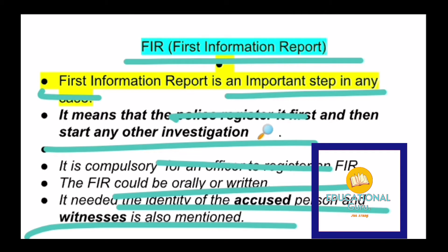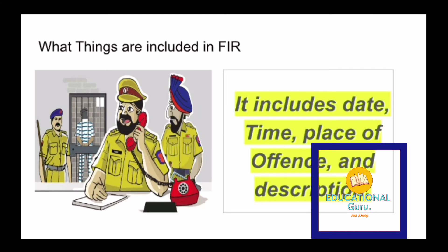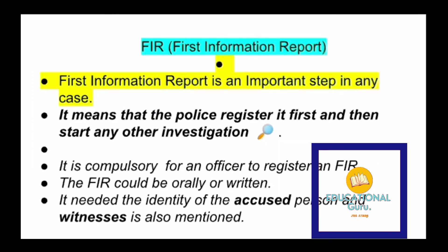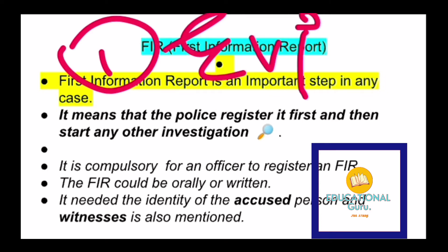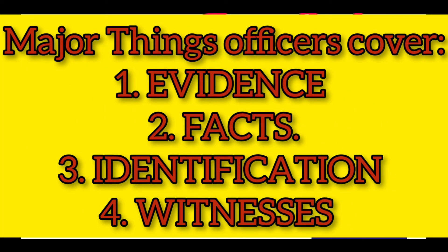There are four main things that are really important in any FIR. The first thing is evidence about the accused person. The second is the facts — for example, details about the person's behavior, whether they were a criminal, or had gone to prison previously.